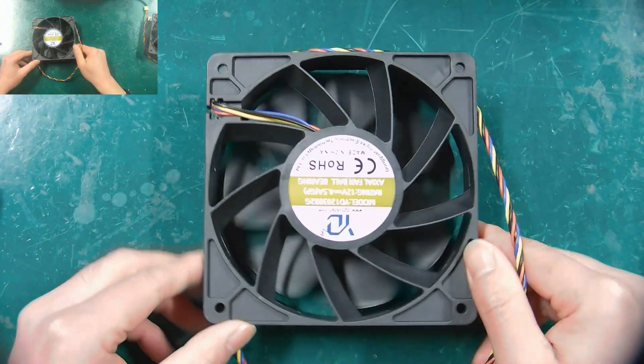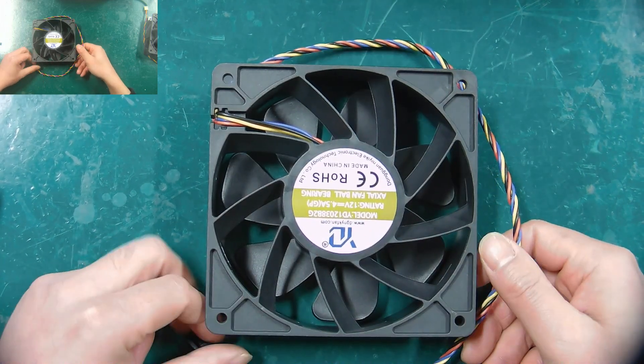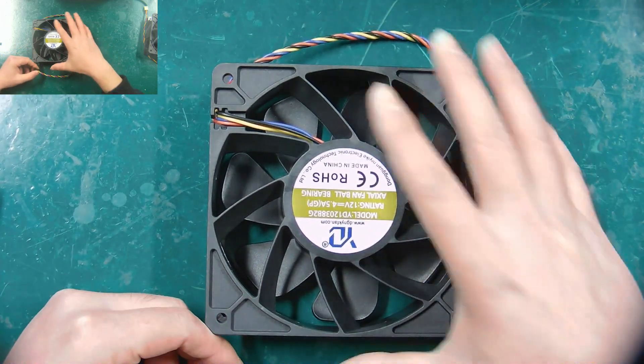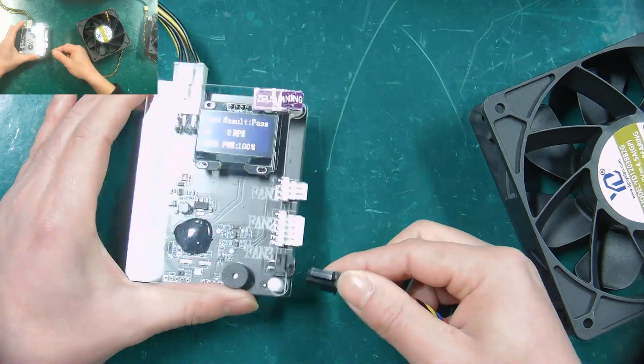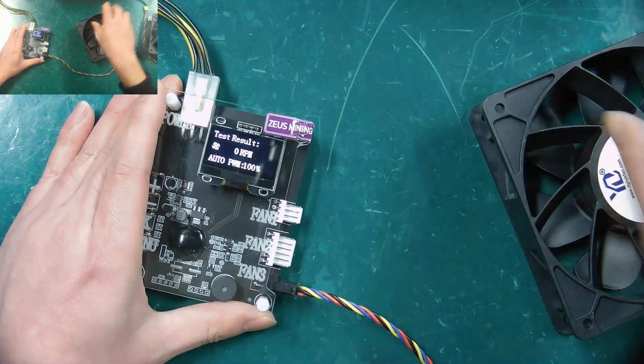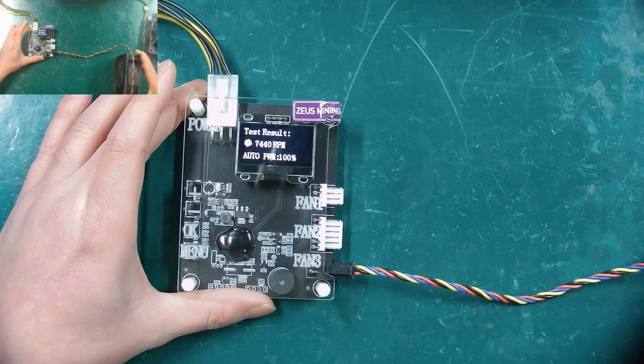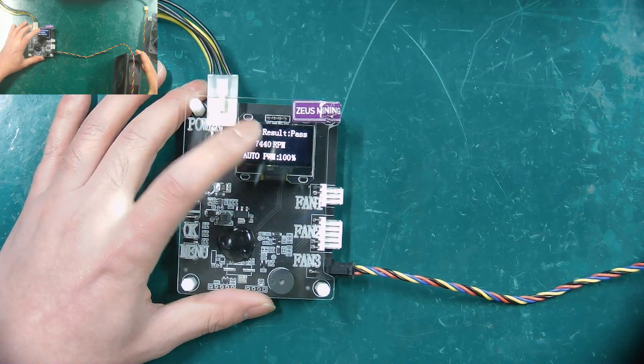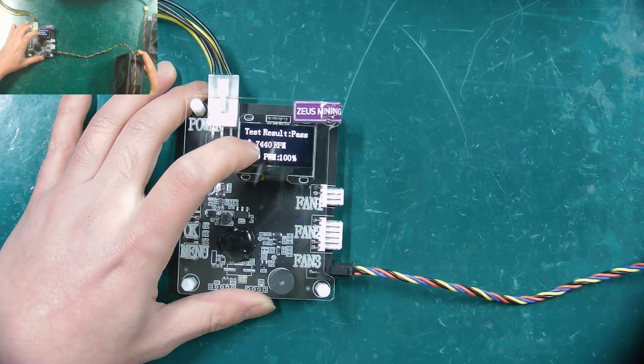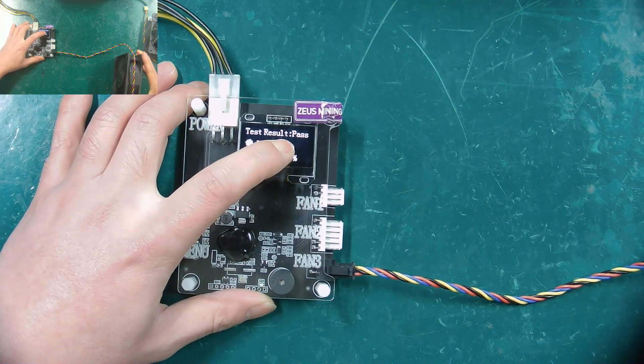The second one, Avalon 7,000 RPM miner fan. When connecting the fan interface on the tester, we need to connect the 4-pin interface below. Look, the speed is normal, and the test result is also pass, indicating that this fan is also normal.